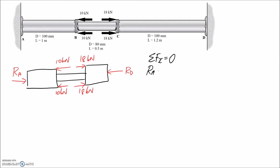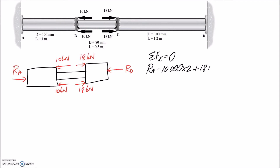We're going to have Ra in the positive direction, and we've got two 10 kN forces pushing to the left — that's minus 20,000 N — and two 18 kN forces pushing to the right — that's plus 36,000 N — and the reaction force Rd, all equal to zero. Simplifying: Ra plus 16,000 minus Rd equals zero. There's not much we can do at this point because we have two unknowns and only one equation, so we need a second equation to solve simultaneously.